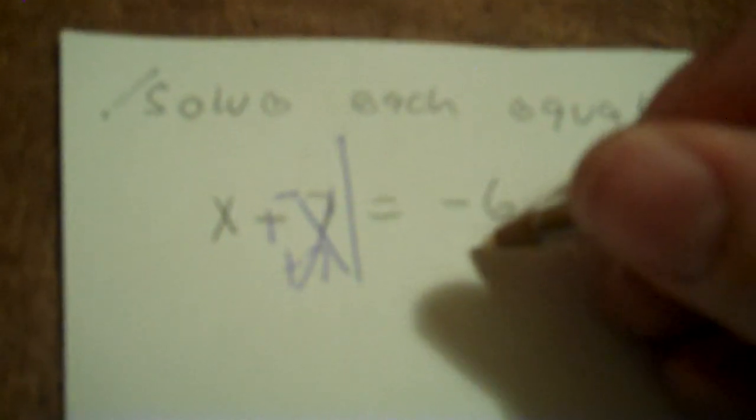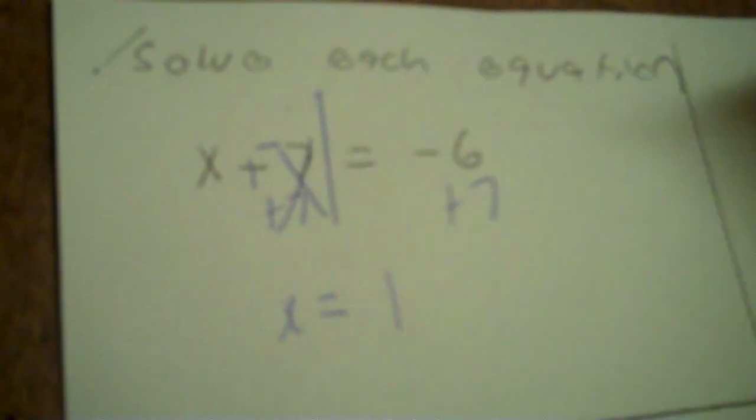Solve each equation. You're solving for x. So you make a wall on the x side. The operation you have is a minus 7, so make it plus negative, and you've got to take that to 0. So to take a negative to 0, you'd move forward, which means you'd add 7, and then add 7 here. Negative 6 plus 7 is 1.